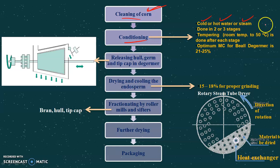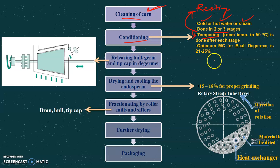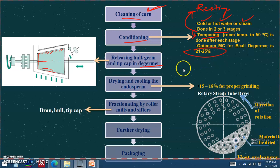Conditioning is carried out in two or three stages, and each stage is followed by tempering. Tempering simply means resting — we provide rest to the grains so that the water and heat get properly dissipated through the grain. Finally, when the moisture content reaches 21 to 25 percent, the conditioning is complete.